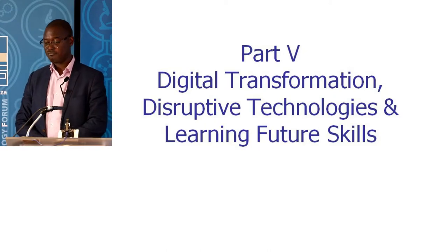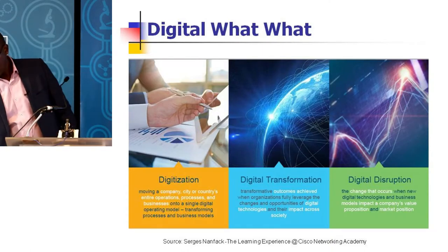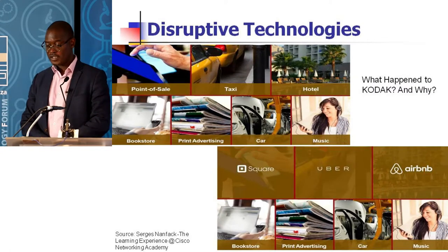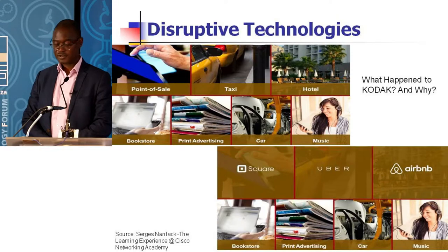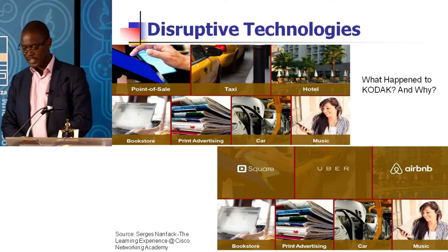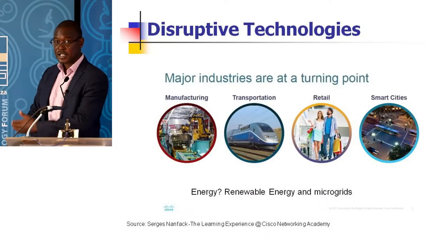I want to talk about digital transformation very quickly. We need to think about the skills for the kids — the future skills, what to start telling them today. Digital transformation, digitization, disruptive technologies — yes. Point of sale has gone. Have you used Uber? In the UK they've made it difficult for taxi drivers. So we have technologies that are disrupting industries.